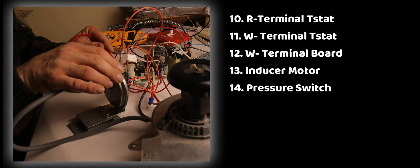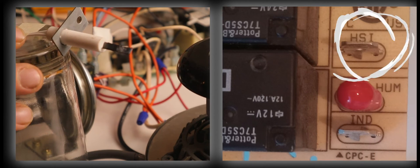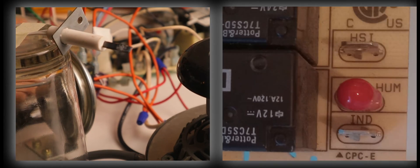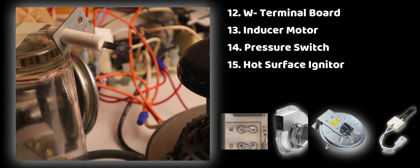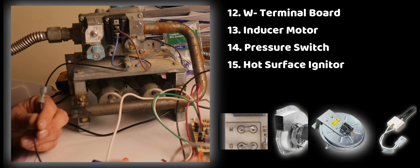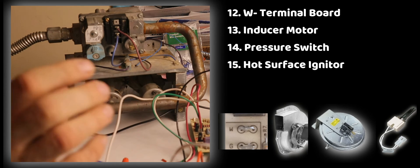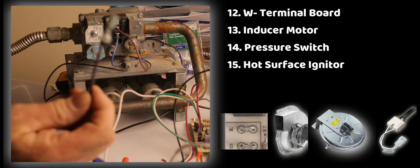Now we have power on our hot surface igniter. The hot surface igniter is now plugged into the board. I'm going to turn heat on at the thermostat again. The inducer motor comes on, our pressure switch is made, and we have power on our hot surface igniter and we should start to see that glow. There we go. When our hot surface igniter lit up there was a little bit of a time delay to allow the igniter to get hot enough.